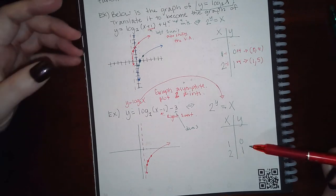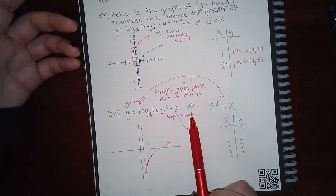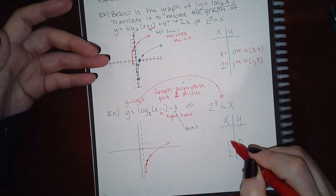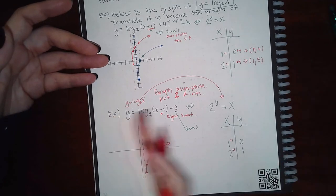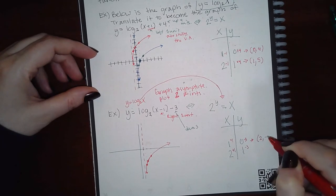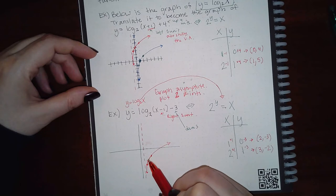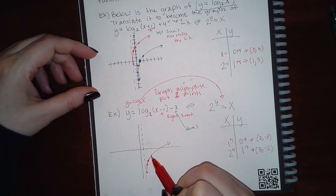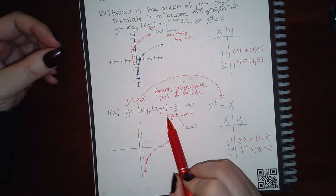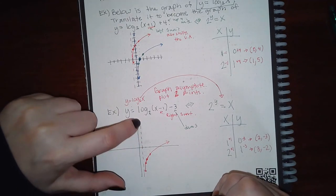I plot those two basic points, but that's the original graph — not the answer. I need to move right one unit and down three units. To go right, I add 1 to the x values; to go down, I subtract 3 from the y values. My new points become (2, −3) and (3, −2). Since the function shifted right one unit, the asymptote goes to x = 1, on top of the y-axis shifted right one unit.